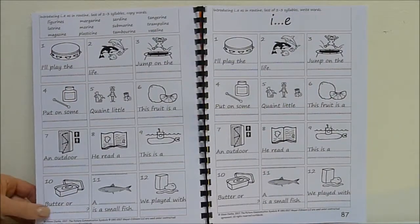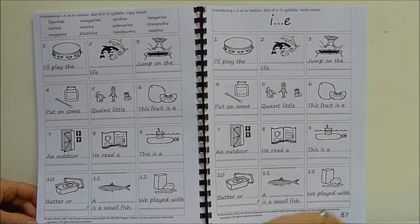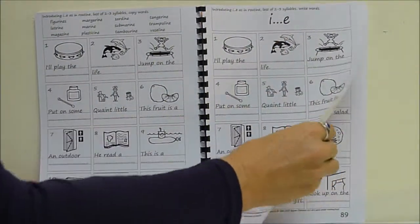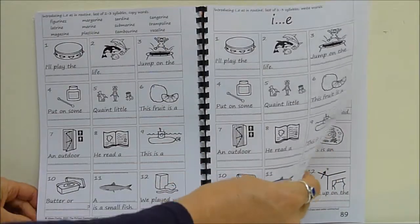And then E like in trampoline, magazines, marine, sardines. So typically it's an I-N-E ending. Sometimes not though, sometimes petite or police.